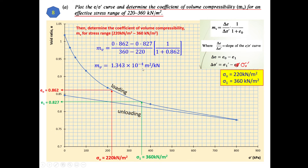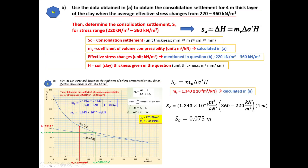The coefficient of volume compressibility mv will be used in the next part to calculate the consolidation settlement. Using the data obtained — the mv value from part (a) — we calculate the consolidation settlement for a four-metre thick clay layer, with the same average effective stress range of 220 to 360 kN/m².